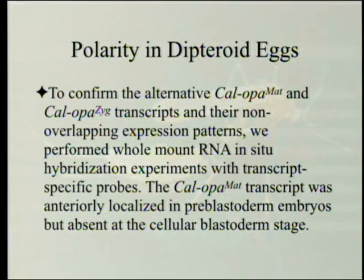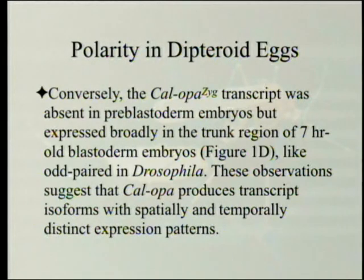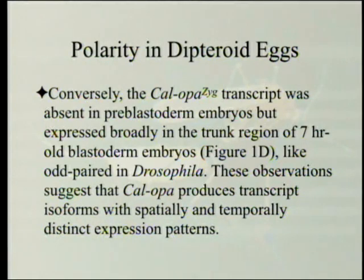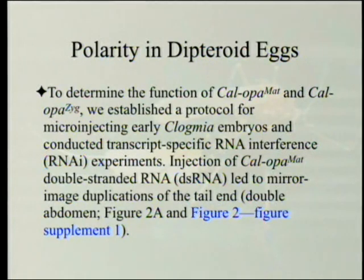To confirm the alternative CalOpa-maternal and CalOpa-zygote transcripts and their non-overlapping expression patterns, the researchers performed whole-mount RNA in situ hybridization with transcript-specific probes. The CalOpa-maternal transcript was anteriorly localized in pre-blastoderm embryos but absent at the cellular blastoderm stage. Conversely, the CalOpa-zygote transcript was absent in pre-blastoderm embryos but expressed broadly in the trunk region of seven-hour-old blastoderm embryos, like odd-paired in Drosophila. These observations suggest CalOpa produces transcript isoforms with spatially and temporally distinct expression patterns.